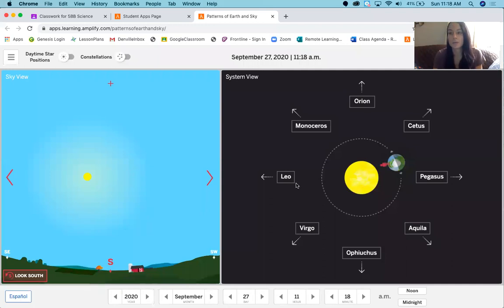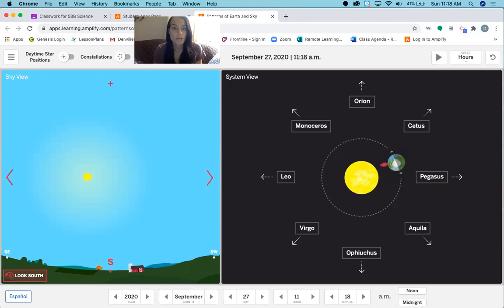Here it is. This is what we showed you before. If you notice, there are some buttons up here. You can turn on daytime star positions, turn that off. Constellations, you can turn that on, turn that off by just clicking on it and it will become blue. Over here, once again, this is a sky view like you are standing on Earth looking up at the sky.